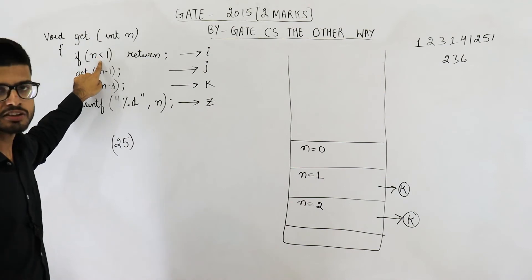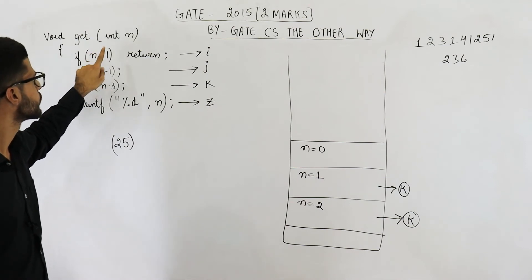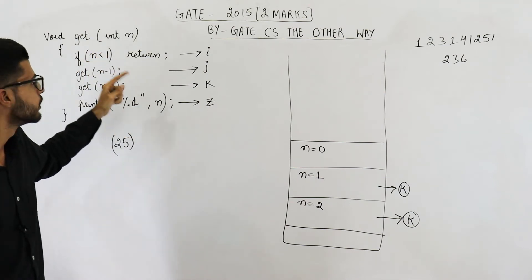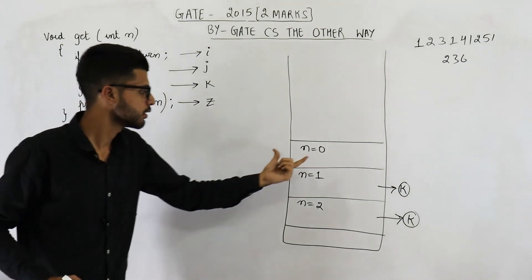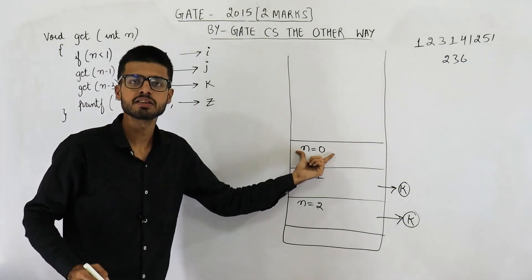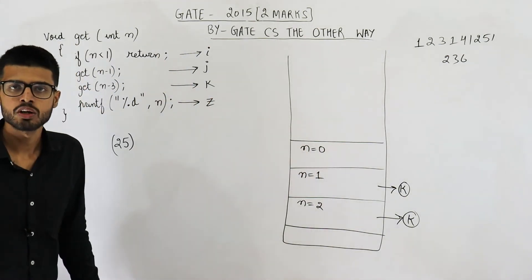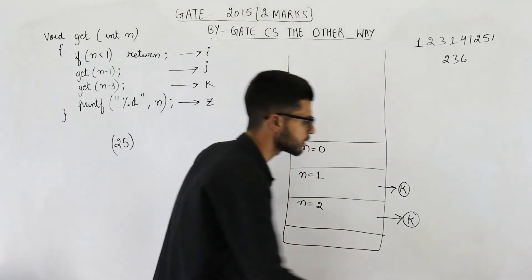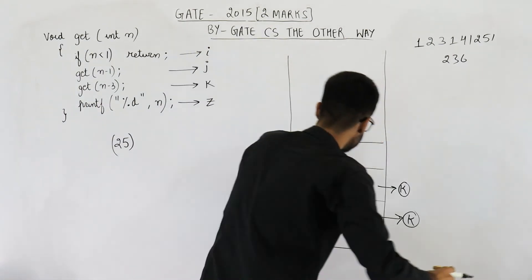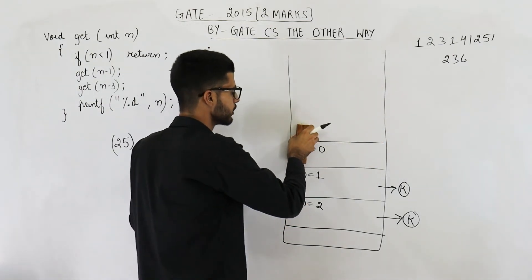So now in this new function begin from line i. This condition will be checked: 0 is actually less than 1, so this is true. Now because this condition is true, this function is going to return.